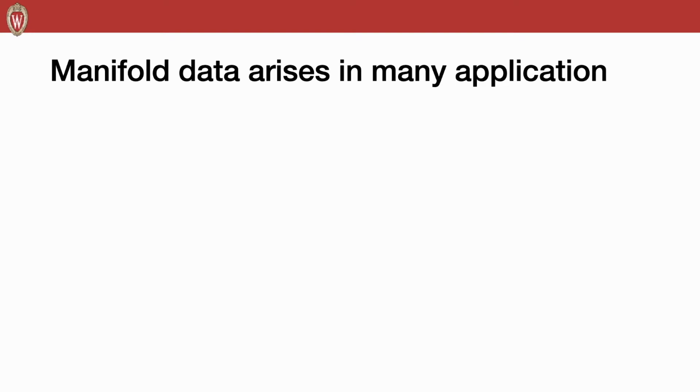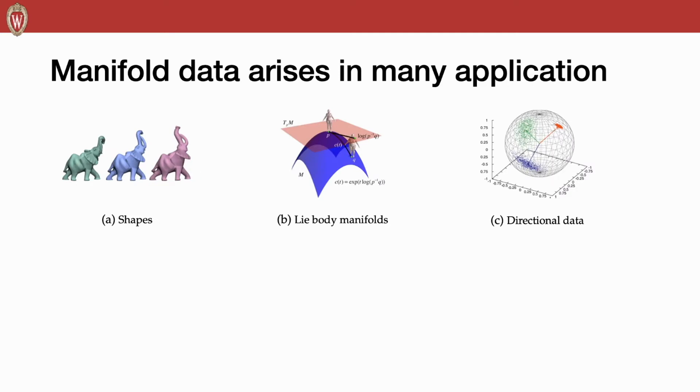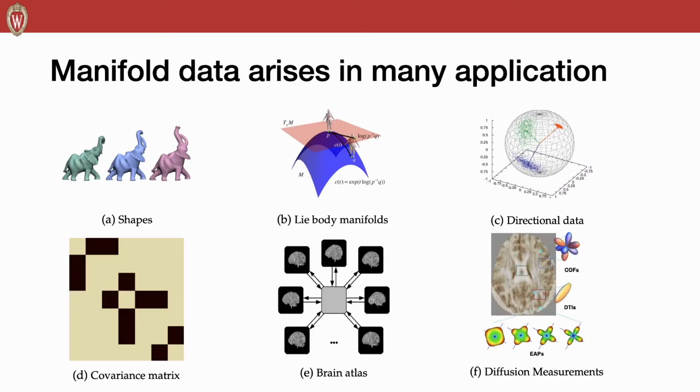Though Euclidean data is currently the main focus of the deep learning field, manifold valued data is also important in some situations. For example, directional data can be viewed as vectors on some sphere. Also, the covariance metrics lie in some SPDN manifold.